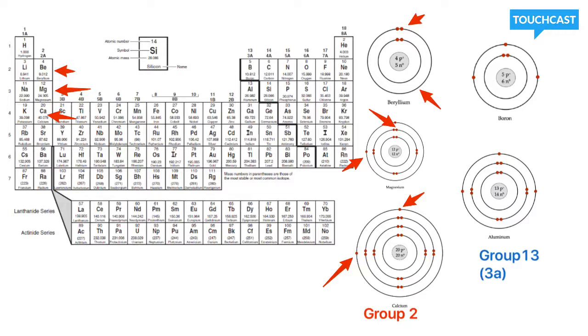Alright, let's go ahead and move over to group 3. If you look here, boron has three valence electrons. Aluminum has three valence electrons.